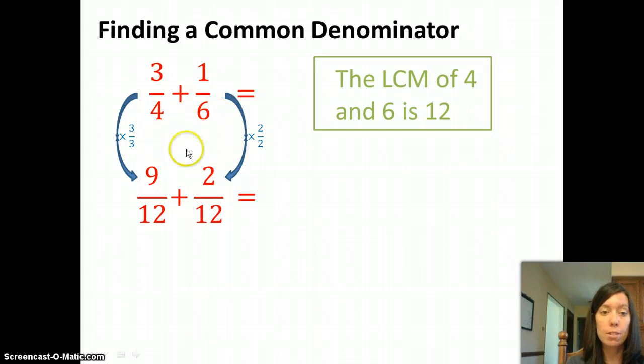So notice that the answer to that question, what do I multiply by, is always going to be different for the two fractions. This one has to be multiplied by 3, but this one has to be multiplied by 2. The goal is to get the same denominator in both fractions.